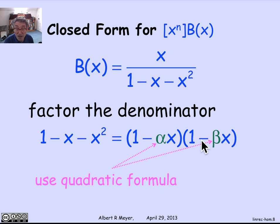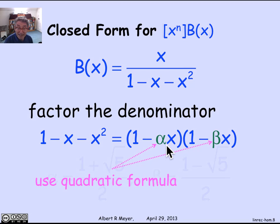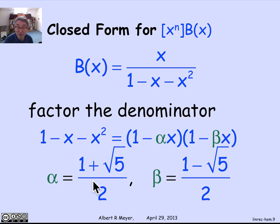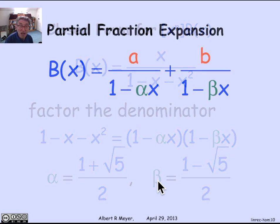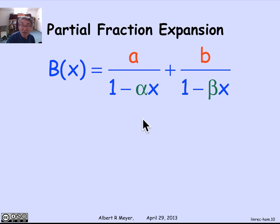Alpha and beta are easy enough to find from the quadratic formula — this is, after all, a quadratic. Alpha and beta will be the reciprocals of the roots of the denominator. Alpha is 1 plus square root of 5 over 2, which is the golden ratio. Beta is 1 minus square root of 5 over 2. These are known values, which is why they're shown in green.